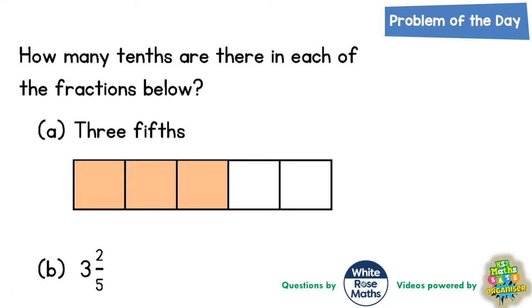How many tenths are there in each of the fractions below? Part A: 3 fifths. Part B: 3 and 2 fifths. There are a couple of ways of doing both questions, so we'll try and explore them both.